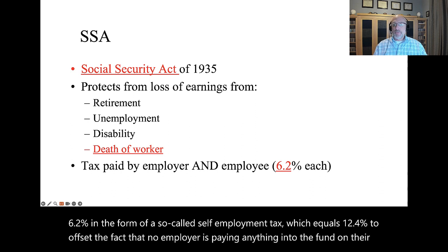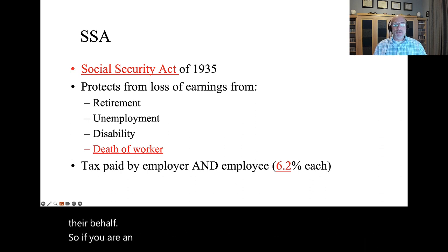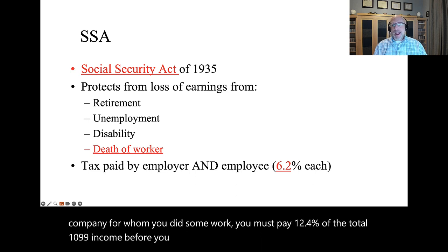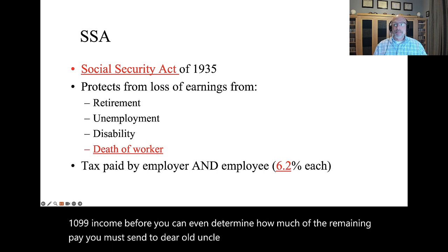Self-employed persons must pay both shares of the 6.2% in the form of a so-called self-employment tax, which equals 12.4%, to offset the fact that no employer is paying anything into the fund on their behalf. So if you are an independent contractor and receive a Form 1099, you must pay 12.4% of the total 1099 income before you can even determine how much of the remaining pay you must send to dear old Uncle Sam.